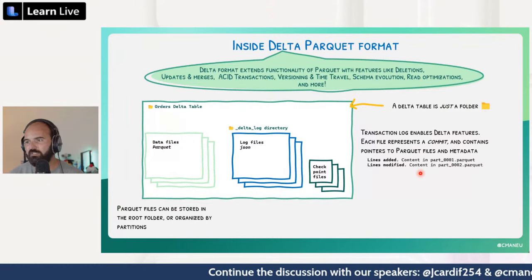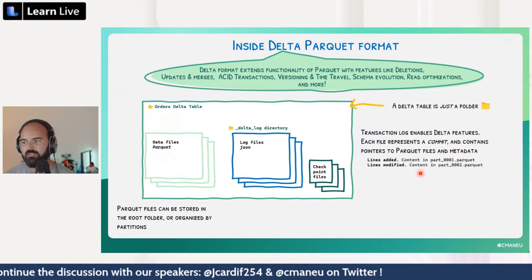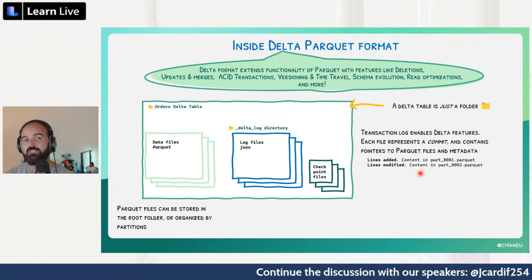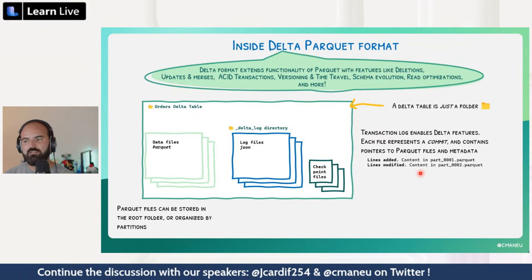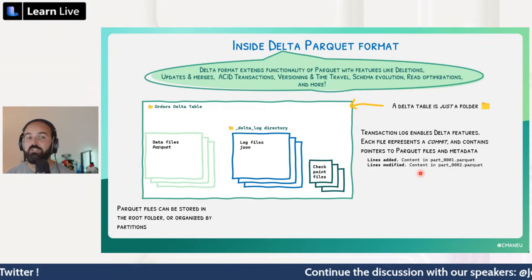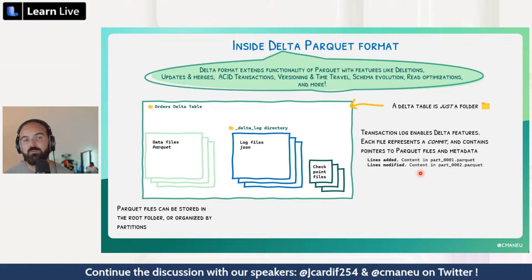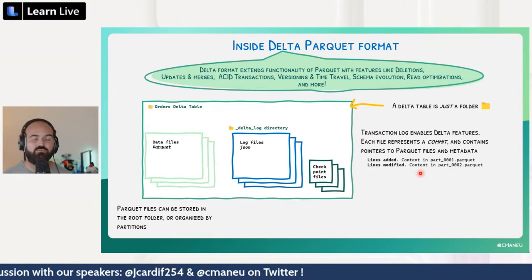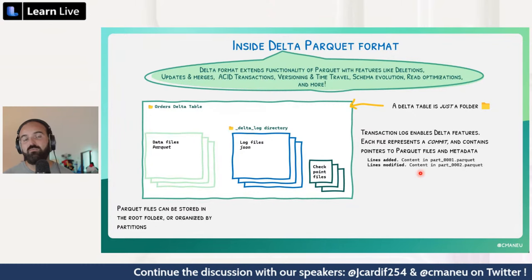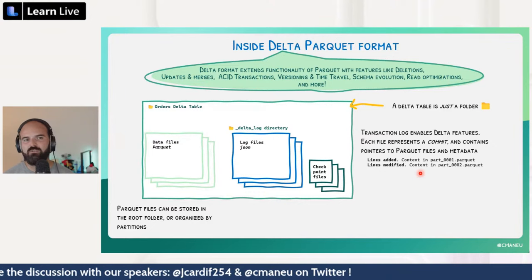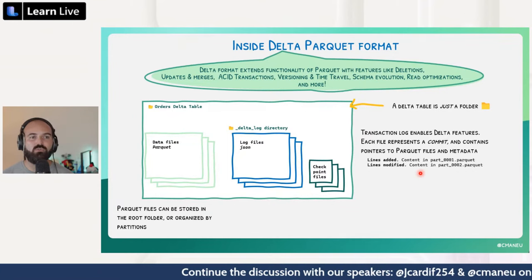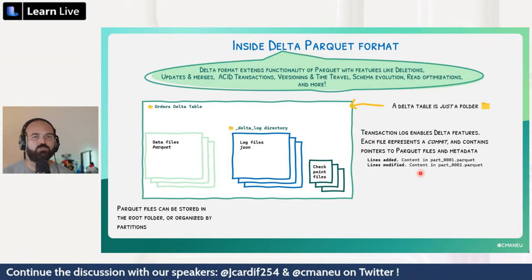We have a question live from the audience: does Delta only support Delta formats — meaning does Delta only support Parquet file format? For now, yes, but that's something that will change. The big data world is evolving quite rapidly. Right now there is work to support more underlying formats than Parquet within Delta, and also to support other table formats close to Delta. These formats are open source and the industry is working to simplify this.